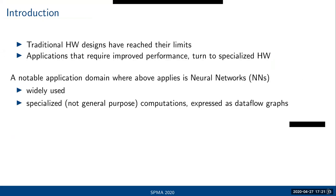A notable example of an application domain that does this is neural networks. Neural networks are very widely used, which creates a strong incentive for people to actually try and improve the performance. And they are also specialized computations expressed as data flow graphs, which is a really good form to be mapped into specialized hardware.